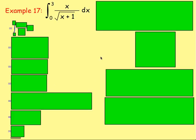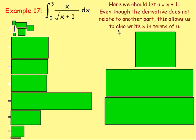Example 17, the last example: integrating x over the square root of x plus 1, with respect to x, between 0 and 3. Remember, you use integration by substitution when the derivative of one part is linked to another. This is a rare occasion where we don't have that — differentiating x gives 1, and differentiating the bit under the square root also gives 1, which isn't linked to x. However, we can let u equal the bit under the square root, which makes the denominator the square root of u, and also lets us write x in terms of u.